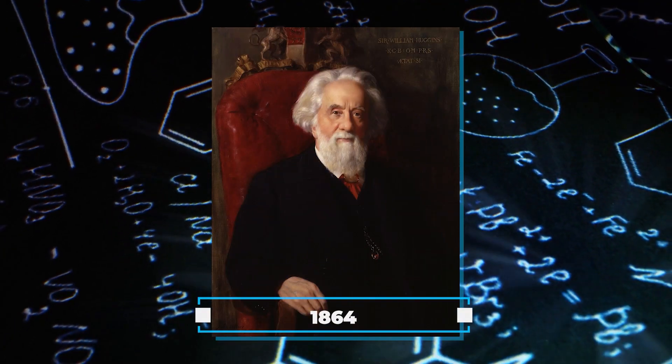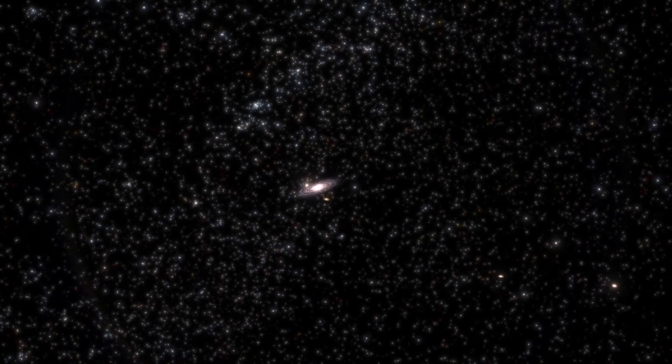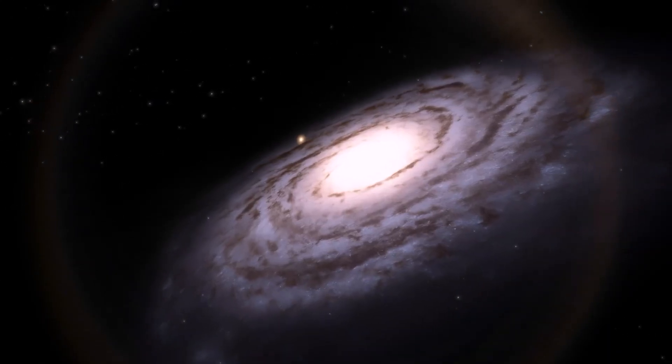Scientists kept studying Andromeda. And in 1864, William Huggins looked at its light and found it was different from other things in space. This helped us understand Andromeda better.